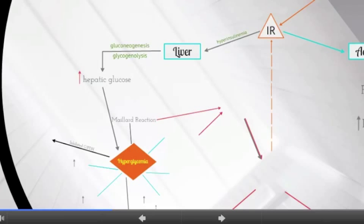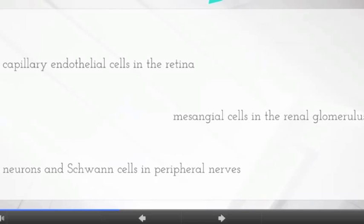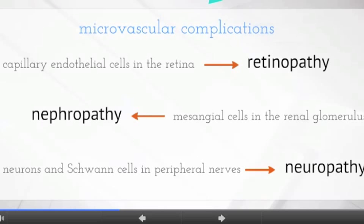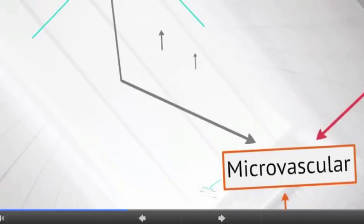Hyperglycemia bathes every cell type throughout the body. Consequently, in type 2 diabetes, cells that are unable to decrease the rate of glucose transported inside the cell become damaged. We see this specifically in three cell types: the capillary endothelial cells in the retina, the mesangial cells in the renal glomerulus, and the neurons and Schwann cells in peripheral nerves — collectively representing microvascular complications: retinopathy, nephropathy, and neuropathy. Hyperglycemia increases several metabolic pathways in these cell types that alter the cell's ability to scavenge intracellular reactive oxygen species, cause blood flow abnormalities, and initiate pathologic modifications to gene expression.